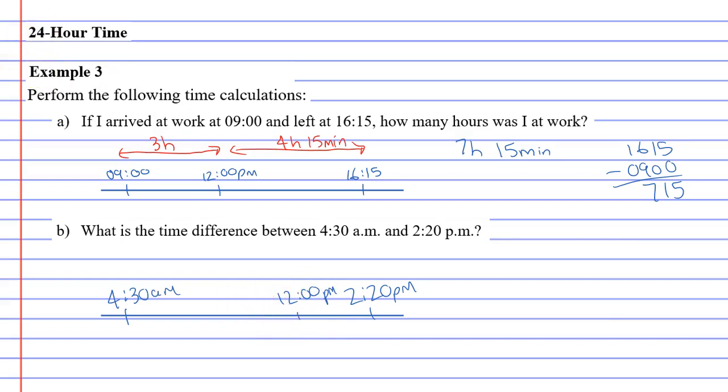All right. So we're going to find the distance between these two intervals. And we'll start with the easier interval at the end. The time difference from 12 to 2:20 is 2 hours and 20 minutes. So that's quite easy to see.